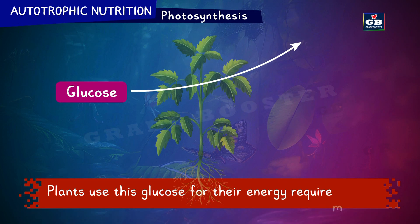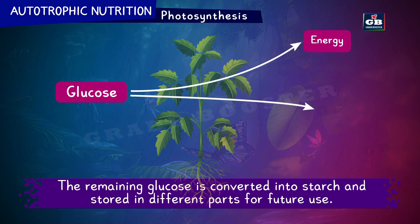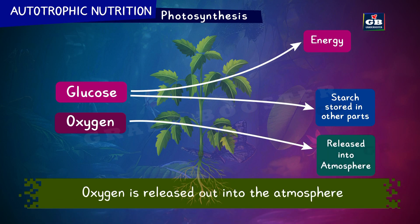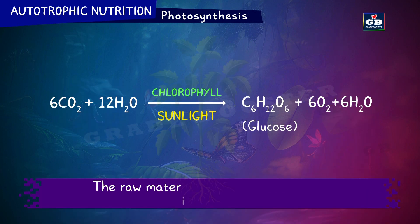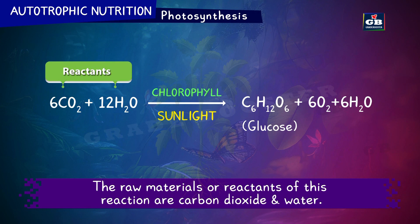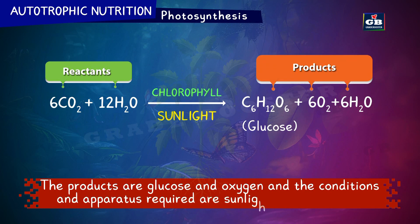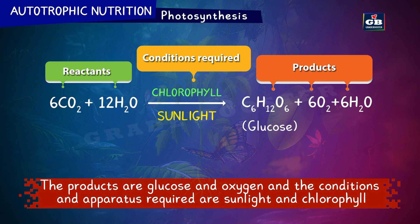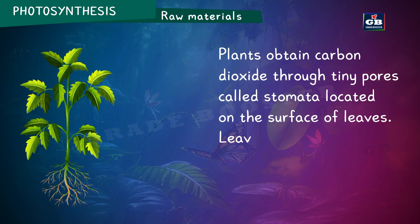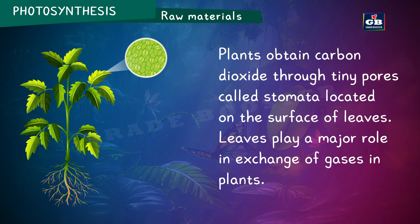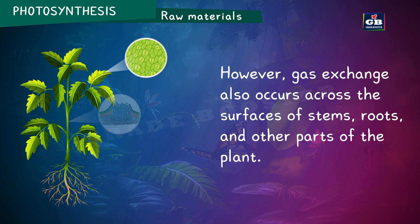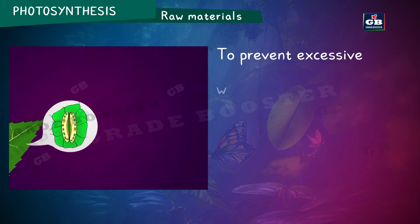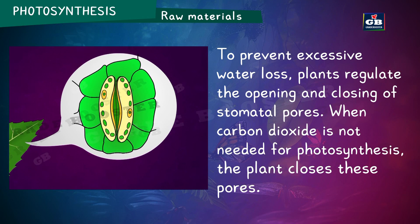Plants use glucose for their energy requirements. The remaining glucose is converted into starch and stored in different parts for future use. Oxygen is released out into the atmosphere. From this equation, the raw materials or reactants are carbon dioxide and water. The products are glucose and oxygen, and the conditions required are sunlight and chlorophyll. Plants obtain carbon dioxide through tiny pores called stomata located on the surface of leaves. Leaves play a major role in exchange of gases in plants; however, gas exchange also occurs across the surface of stems, roots and other parts of the plant.